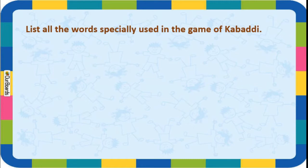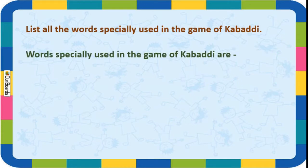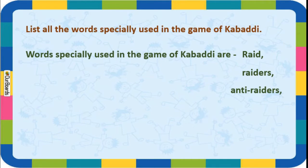Let us list all the words specially used in the game of Kapati. You know that there are some special words that are only used in Kapati. Words specially used in the game of Kapati are: Raid, Raiders, Anti-Raiders, Tag, Lona, and Midline. If you read the lesson, you will come across all these words specially used in the game of Kapati.